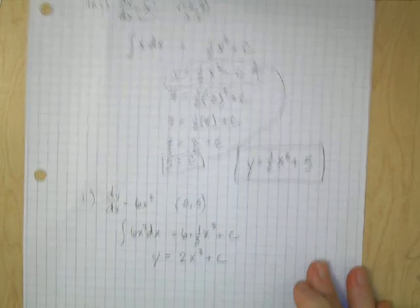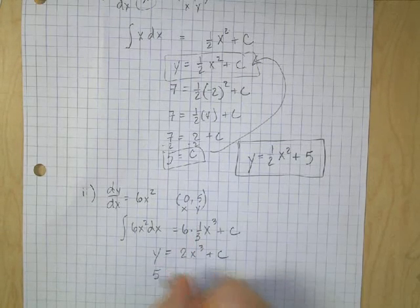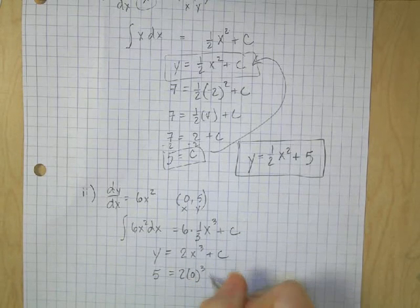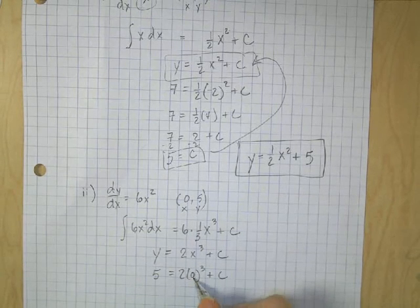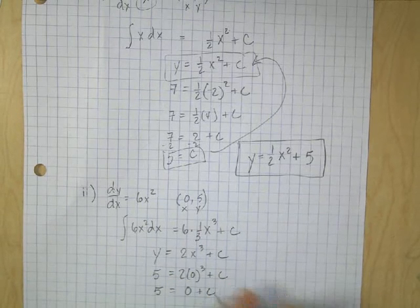Now I'm going to substitute in my values for x and y. So 5 is equal to 2 times 0 cubed plus c. 0 cubed is 0, 0 times 2 is 0, 5 is equal to 0 plus c.